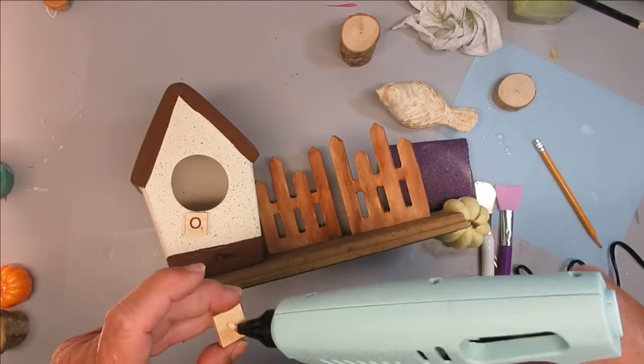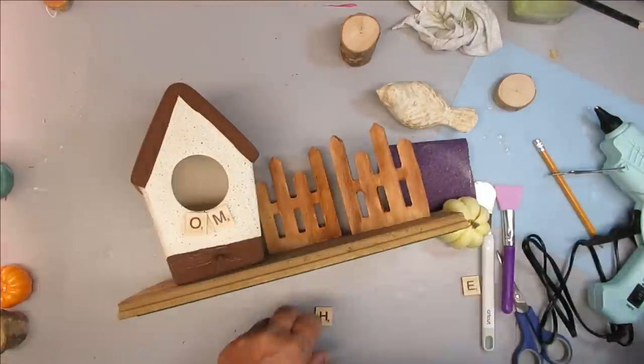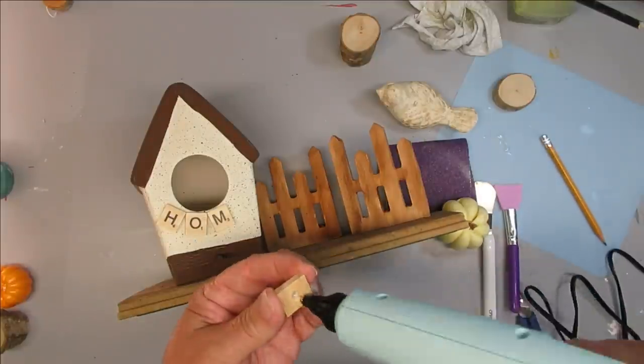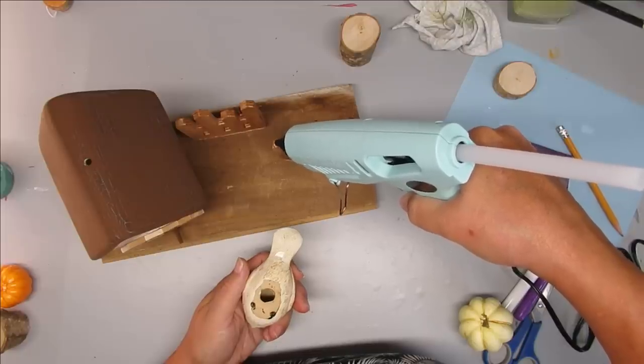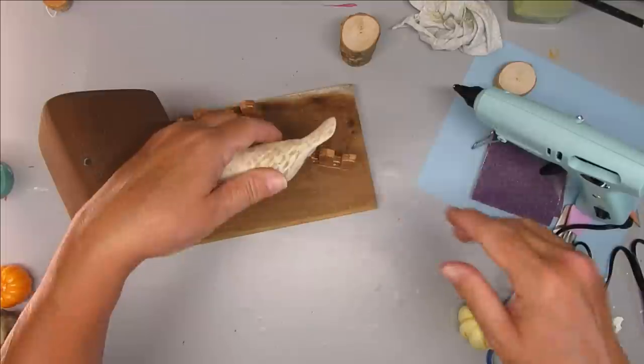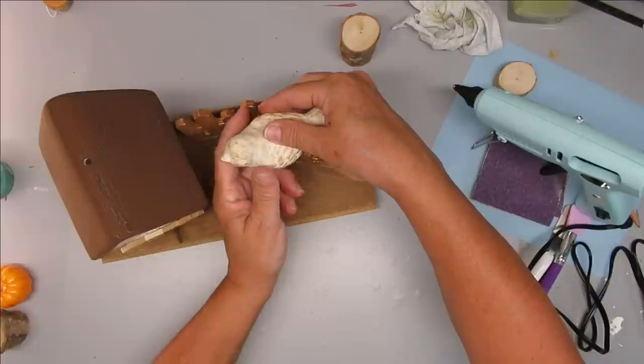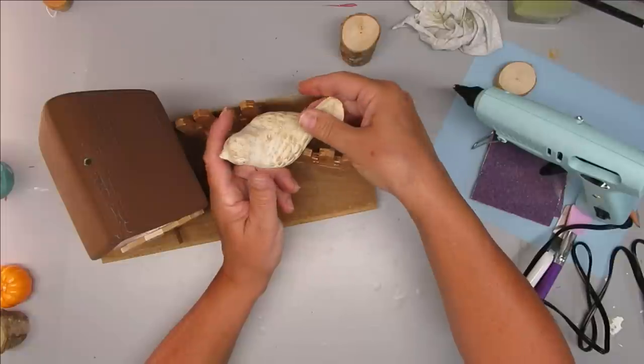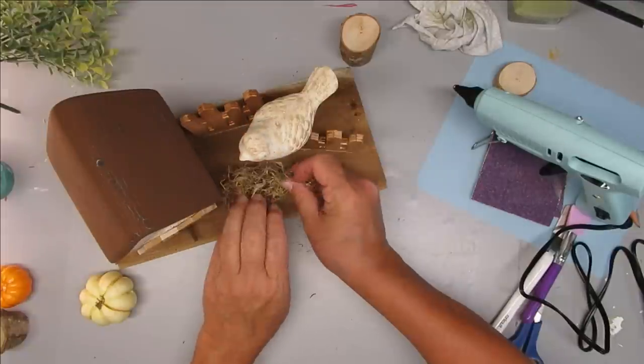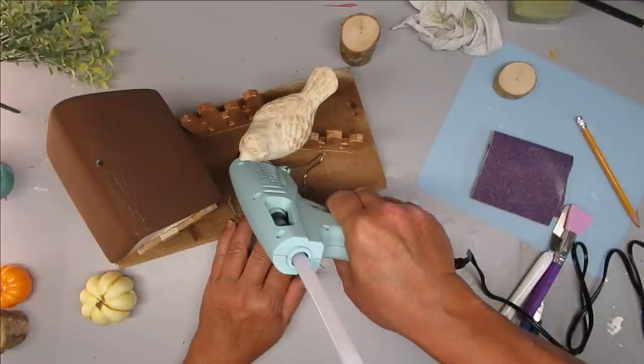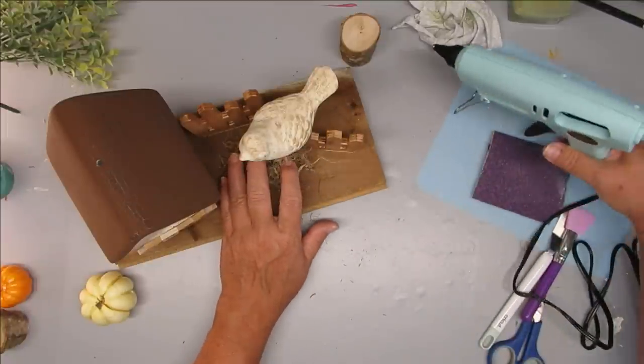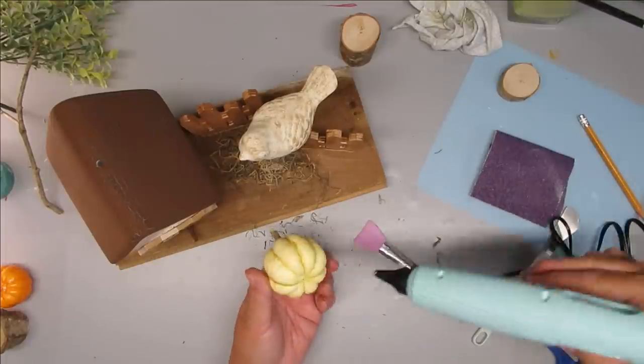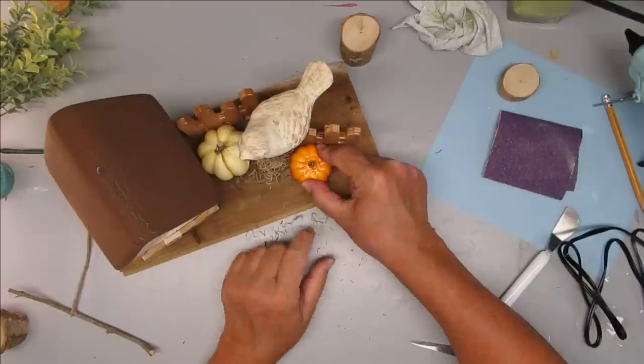I'm using the scrabble letters one more time to spell out the word home and I'm going to stick them right onto the birdhouse to give it a little bit more of a whimsical look. I've had this little bird in my stash from a dollar store. I'm just gluing him right on top of one of the fence posts. Now here comes the fun part where I take all sorts of little embellishments and just create a one-of-a-kind project. I hope you enjoy watching me create this and get some inspiration from these fall decor ideas.